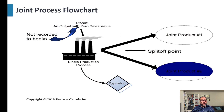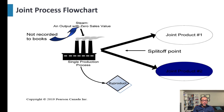There is a flow chart that explains the whole process: a factory emits carbon or smoke — an output with zero saleable value that we cannot sell. The factory produces two products, product one and product two, and at the split-off point these products become separable. There is also the possibility that the industry produces a byproduct with a saleable value, but very low compared to the main products.